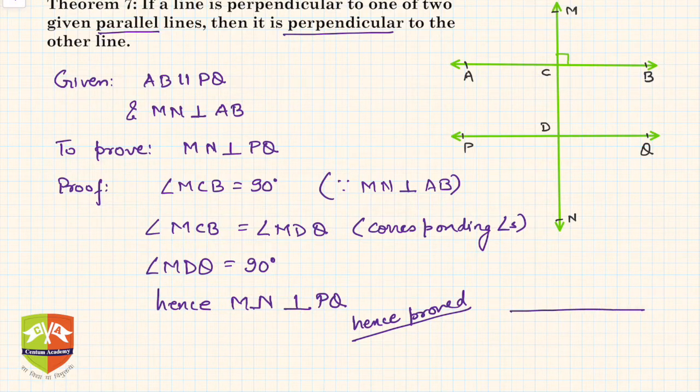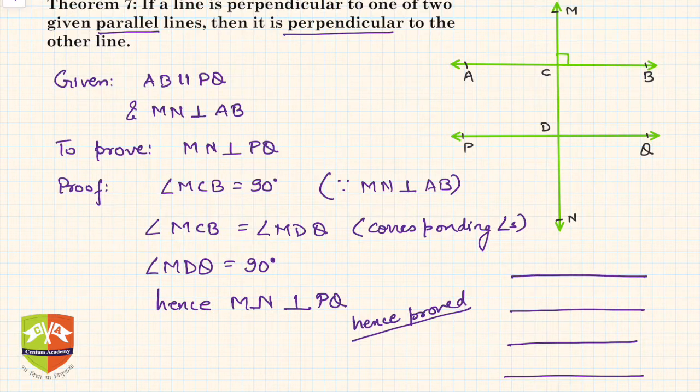For example, if you have multiple parallel lines, multiple parallel lines, and let's say there is a transversal. So let me draw. Yeah, again. So let's say this is a transversal. And let's say any of these angles is 90 degrees.